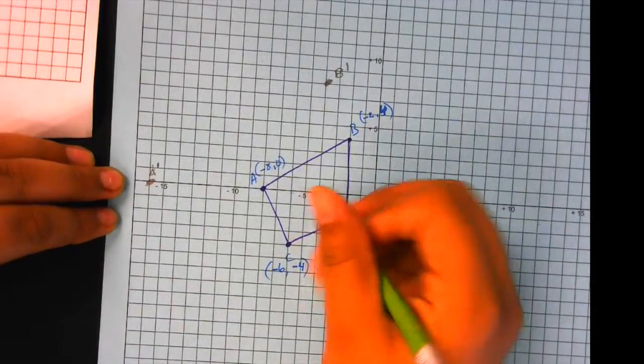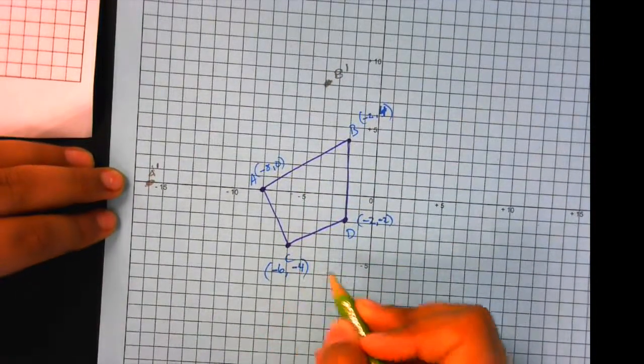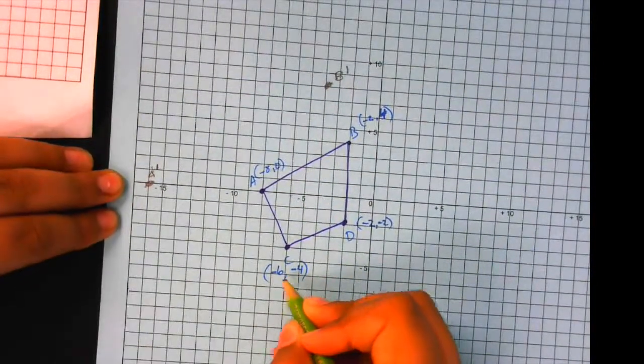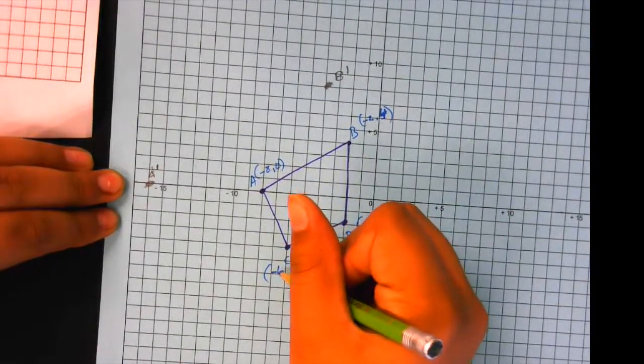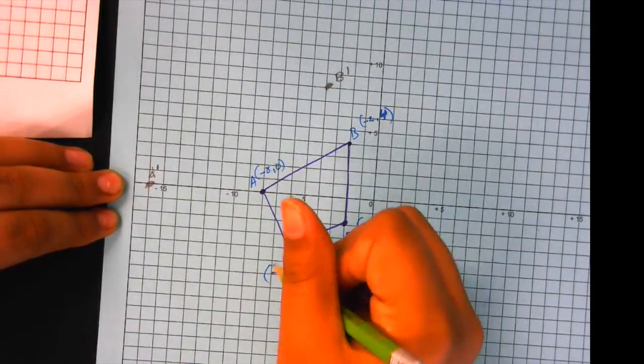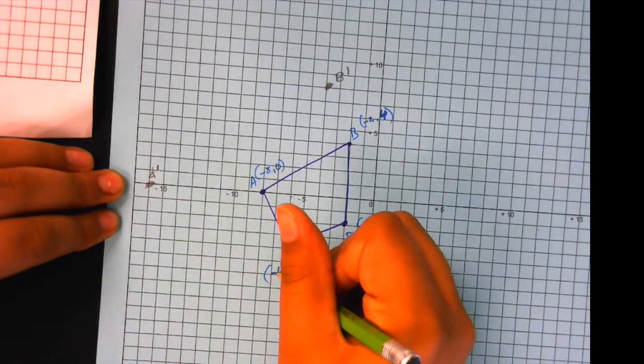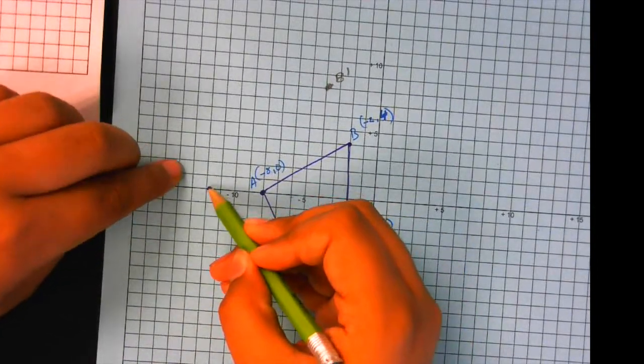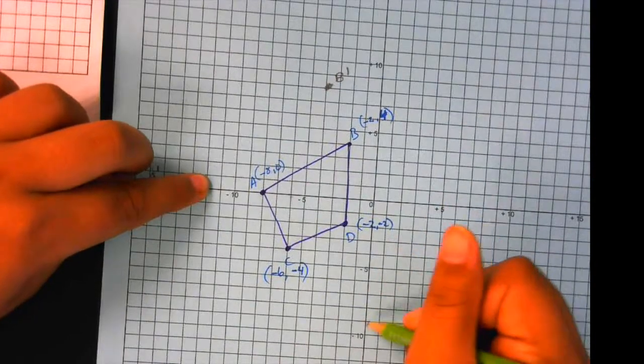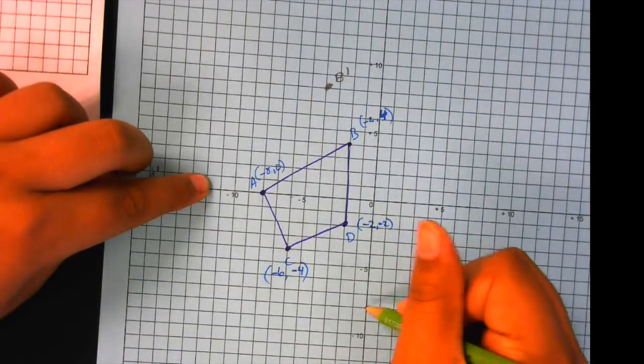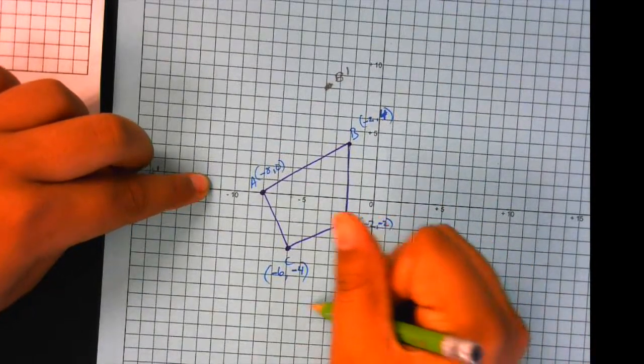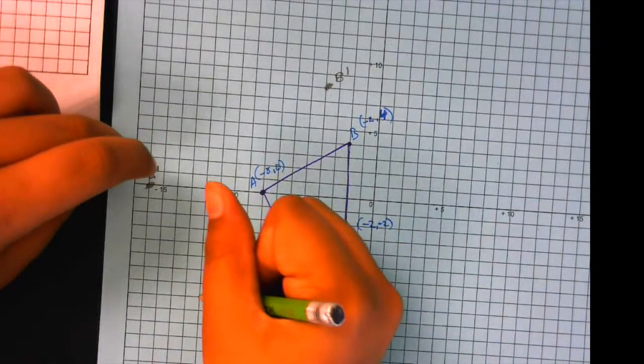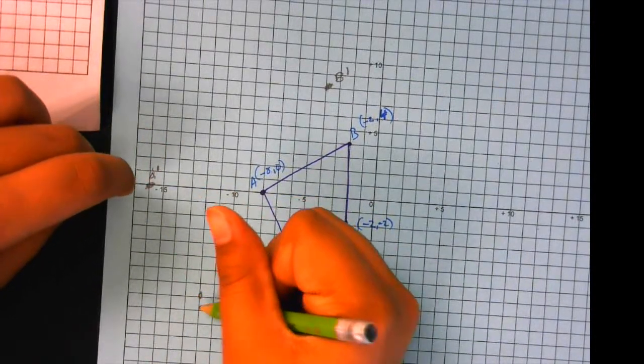And the next coordinate, C, it's negative six and negative four. So you would multiply negative six by two and negative four by two. So it would be 12 and eight. So 12 is over here. And then you want to go eight down. So it would be right there. So this becomes C prime.